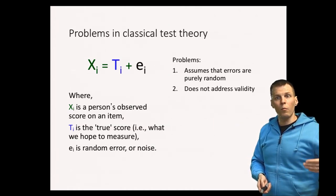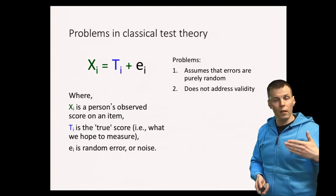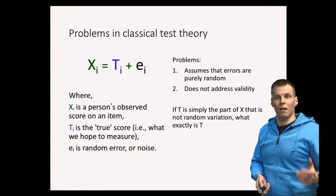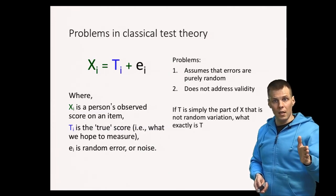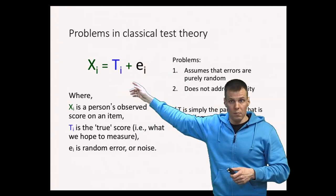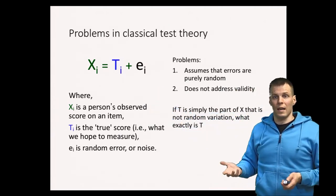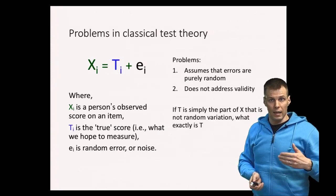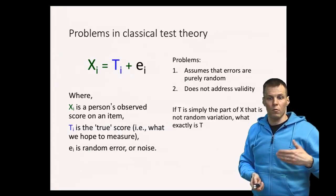But there's still one more final question. If you only think about what is reliability, the question is if the T here, the true score, is simply the part of X that is reliable, what exactly is T? So the theory doesn't answer that, and that's a validity question. So it's not a question about reliability.